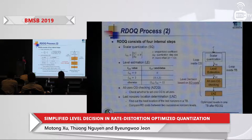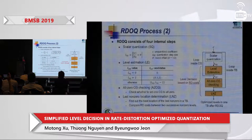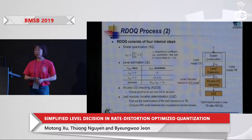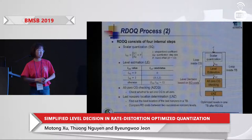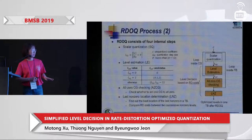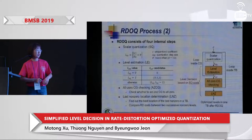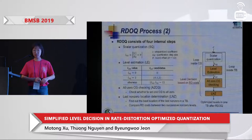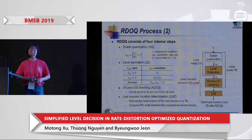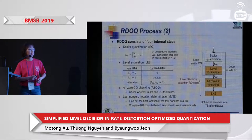This L_SQ level is the input of the next step — level estimation. In this step, each transform coefficient has its own level estimation candidates depending on the L_SQ value: when L_SQ equals zero there is only one candidate (zero); when L_SQ equals two there are three candidates (zero, one, two); for all other cases there are two candidates, L_SQ and L_SQ minus one. The output is chosen from these candidates based on RD cost — the level with the smallest RD cost is chosen.